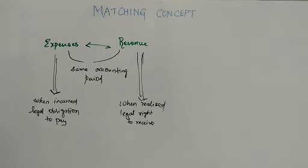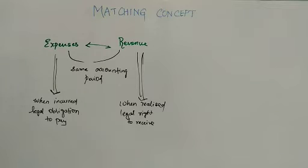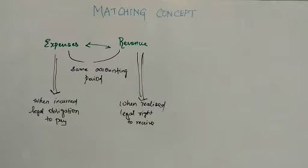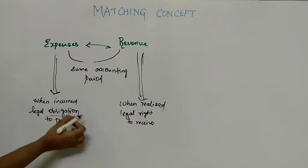Revenue is when it is realized — already covered in the revenue recognition concept. When revenue is realized, it means there is a legal right to receive. For example, sales is revenue. When we make a sale on credit — a debtor buys furniture — we have a right to receive cash after one month. So obligation to pay and right to receive are the key ideas. Cash is not the determining factor.